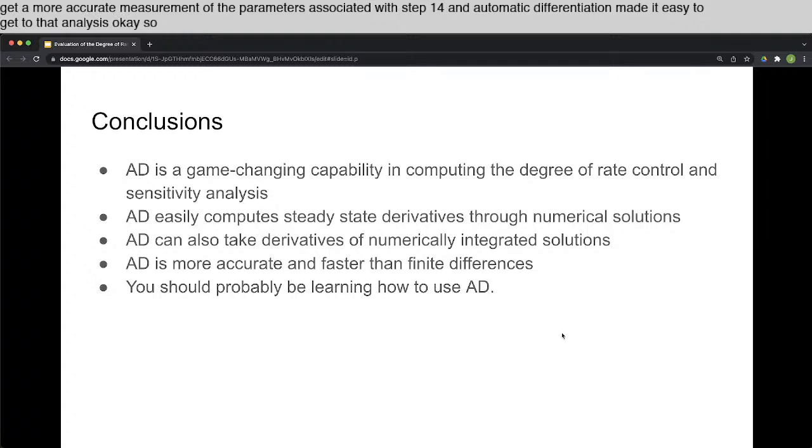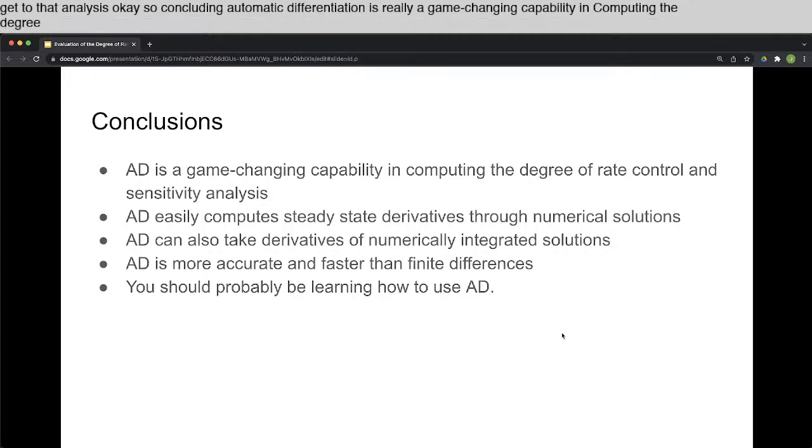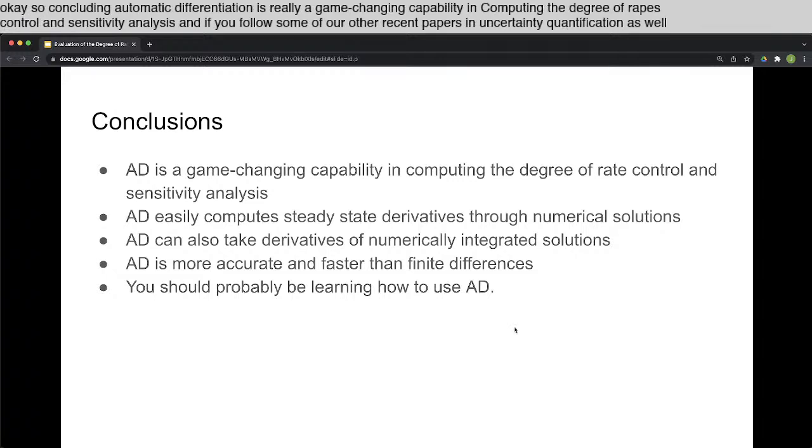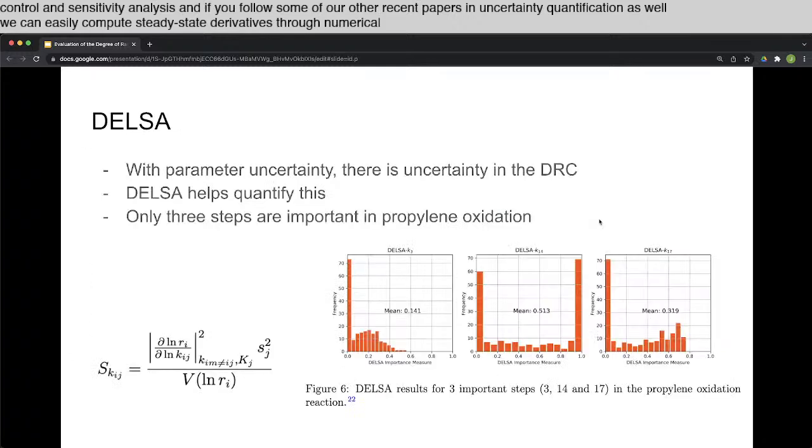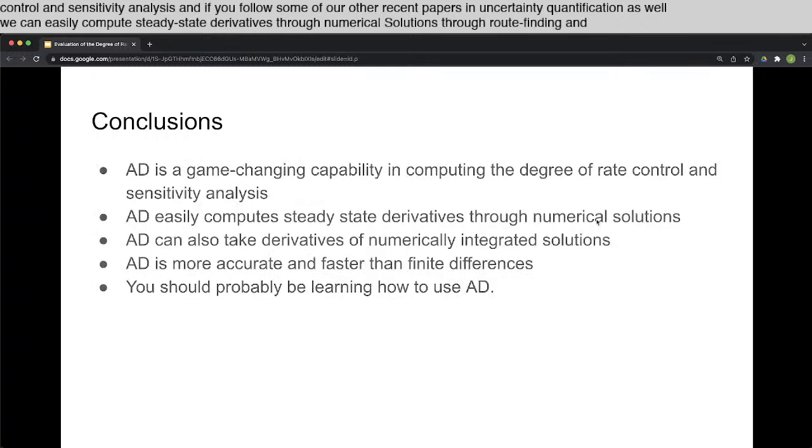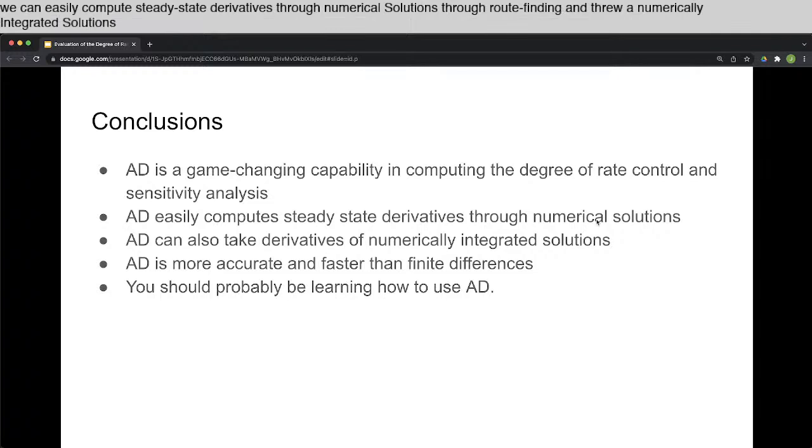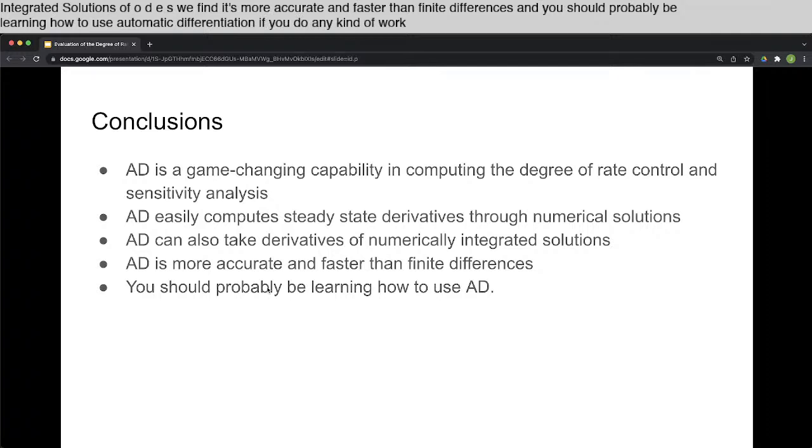So concluding, automatic differentiation is really a game-changing capability in computing the degree of rate control and sensitivity analysis, and if you follow some of our other recent papers in uncertainty quantification as well. We can easily compute steady-state derivatives through numerical solutions, through root finding, and through numerically integrated solutions of ODEs. We find it's more accurate and faster than finite differences and you should probably be learning how to use automatic differentiation if you do any kind of work like this in the future.